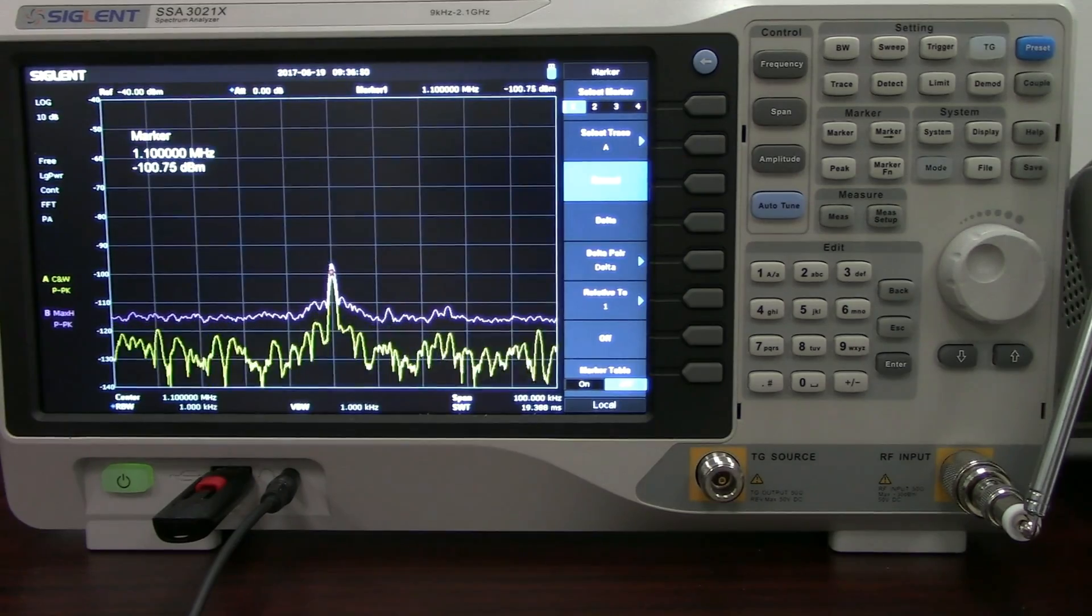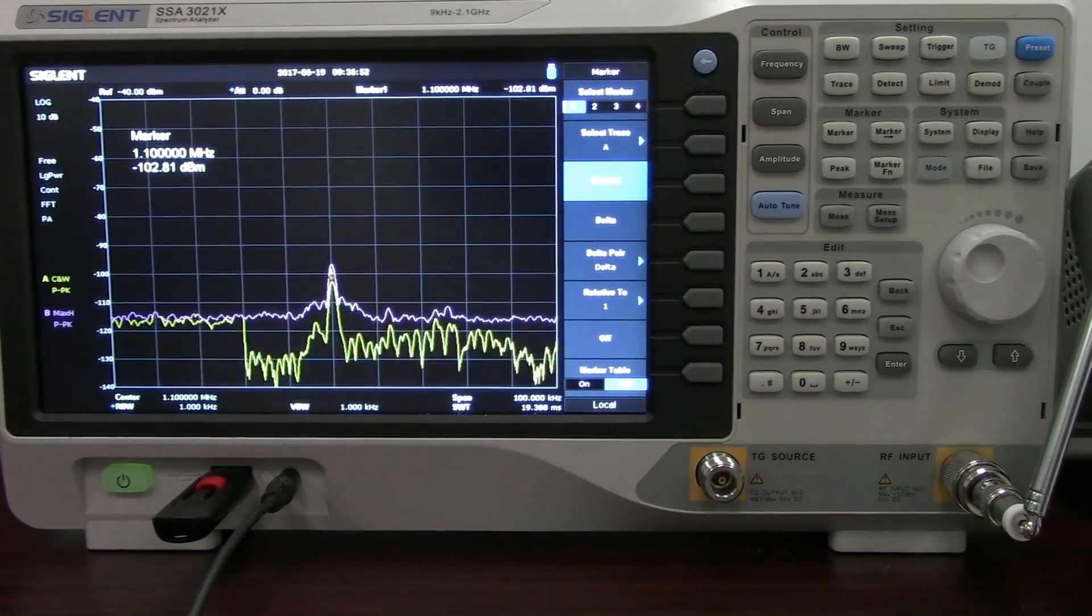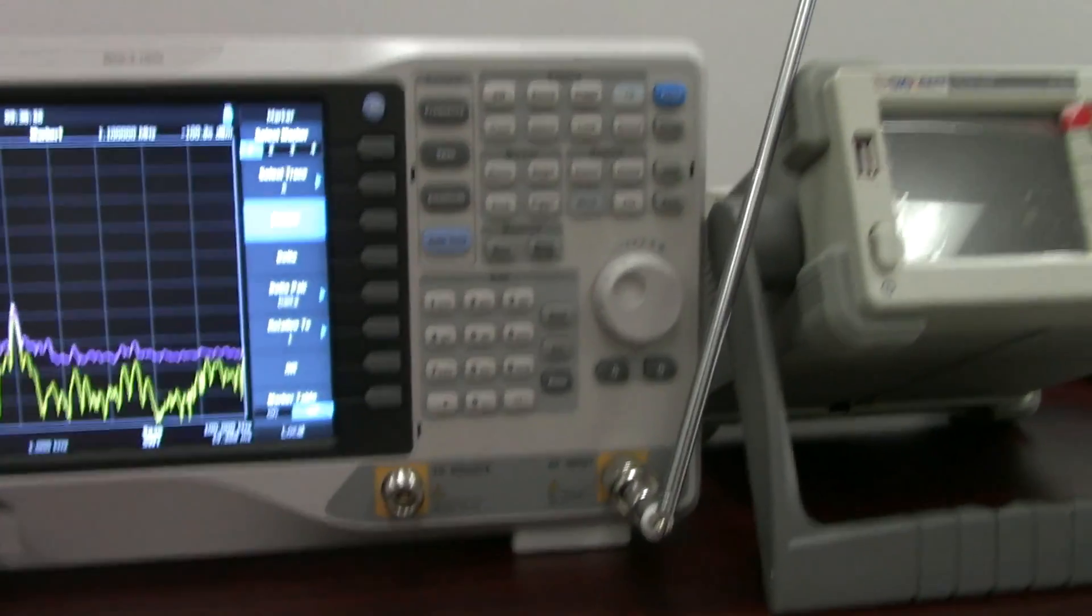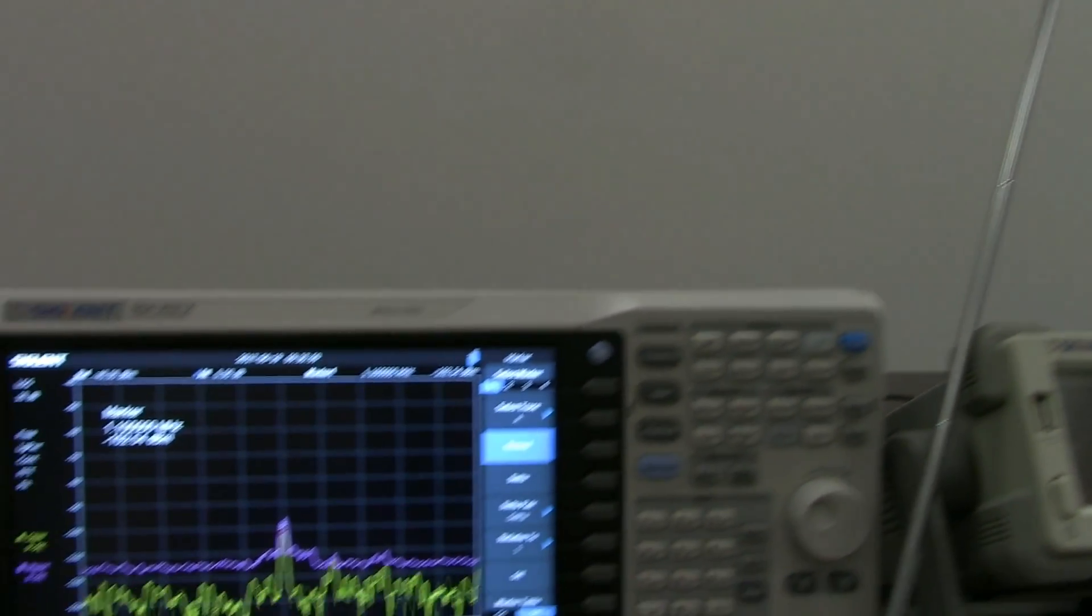And again, 1.1 megahertz using the same antenna. This time instead of mains power we're collecting data powering the spectrum analyzer directly off of the uninterruptible power supply. And that uninterruptible power supply shown here has been disconnected.